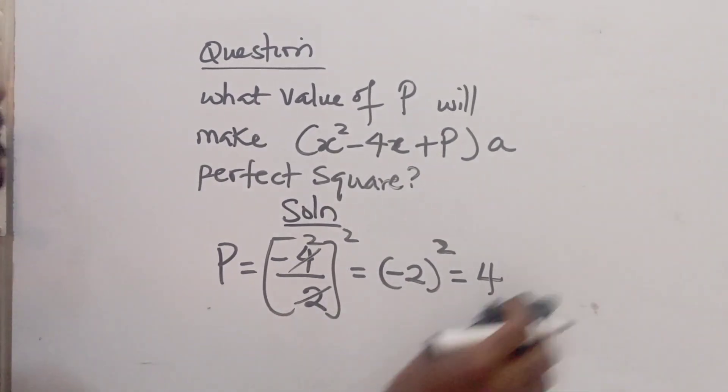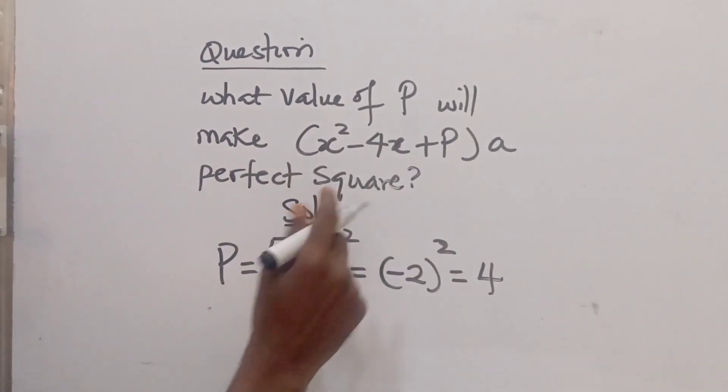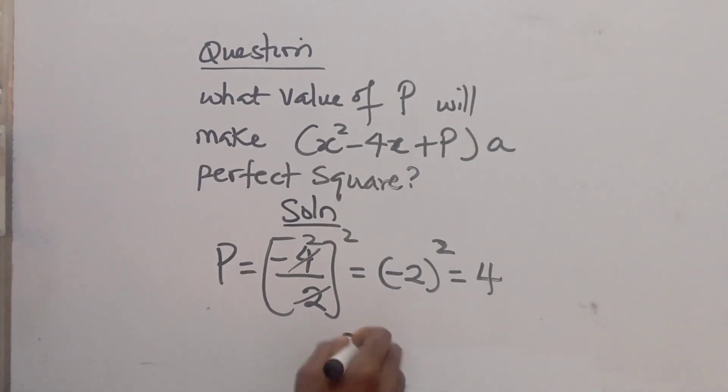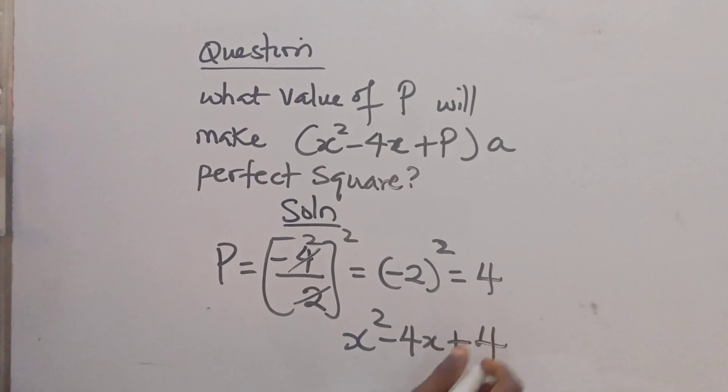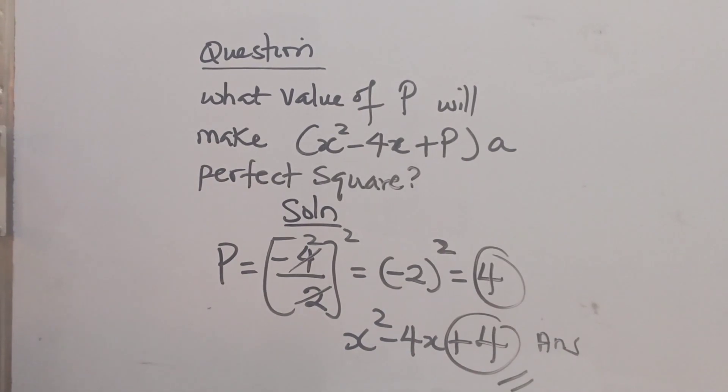So the value of p that makes this a perfect square is... we have x squared minus 4x plus 4. So p is actually equal to 4. So p is 4. That is the answer to this question.